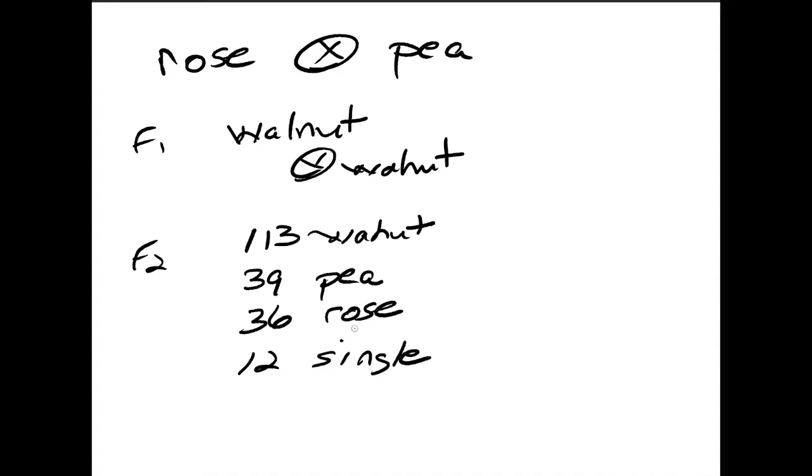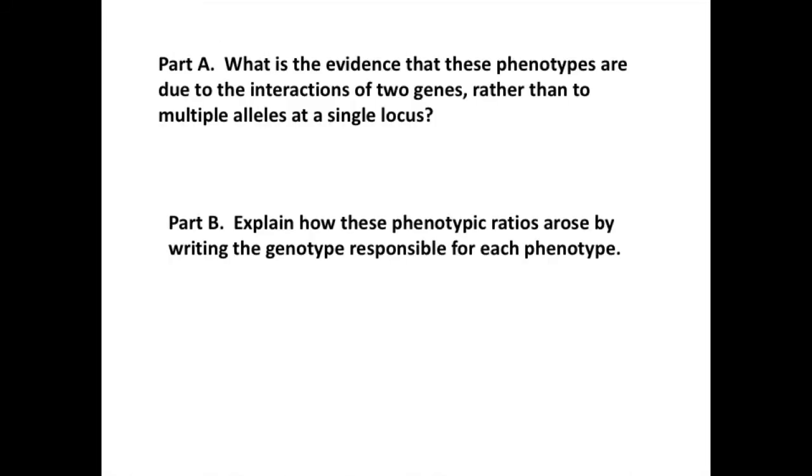Using these data, let's work through the questions below, which are Problems 8-23 in the book. First, what is the evidence that these phenotypes are due to the interactions of two genes rather than to multiple alleles at a single locus? And second, explain how these phenotypic ratios arose by representing the genotypes responsible for each phenotype.